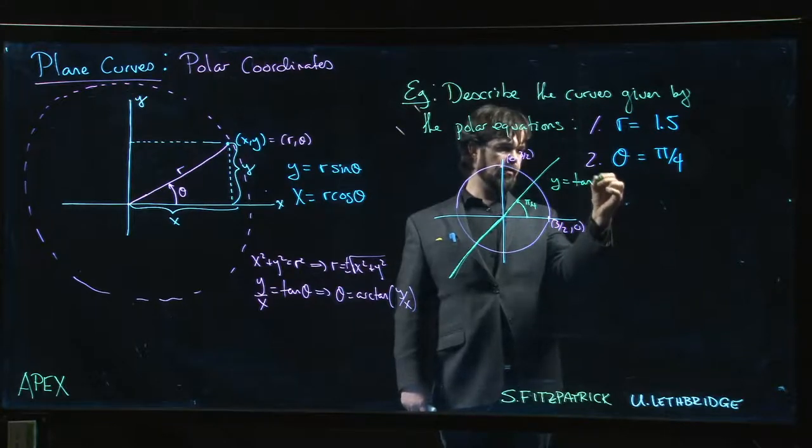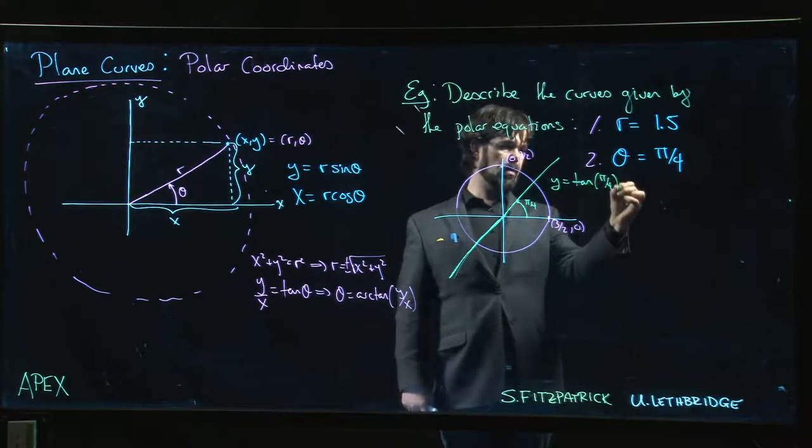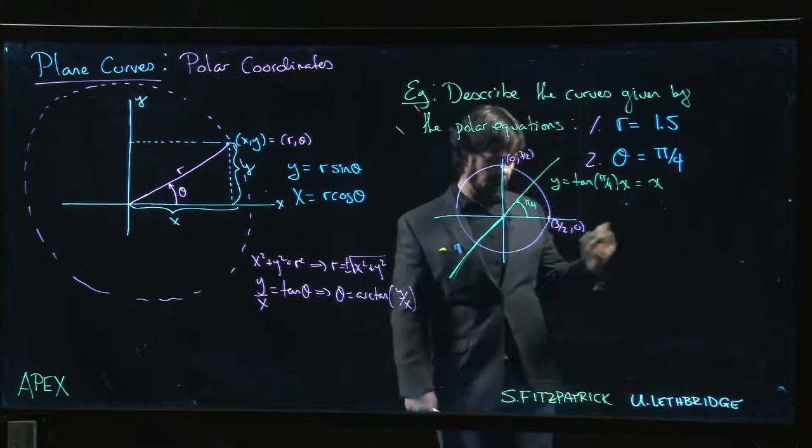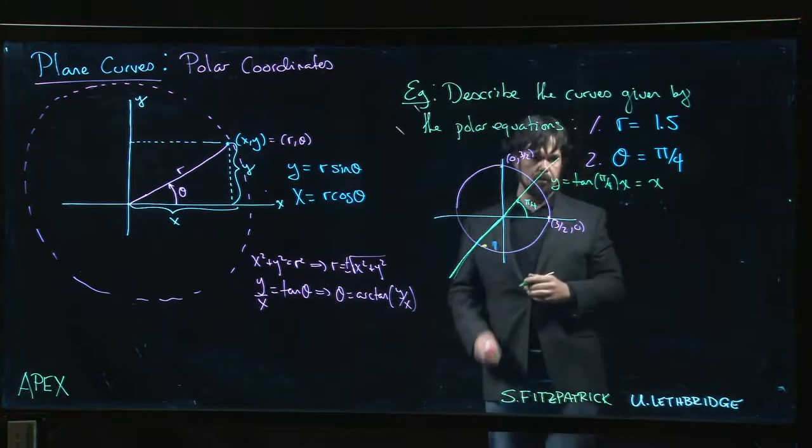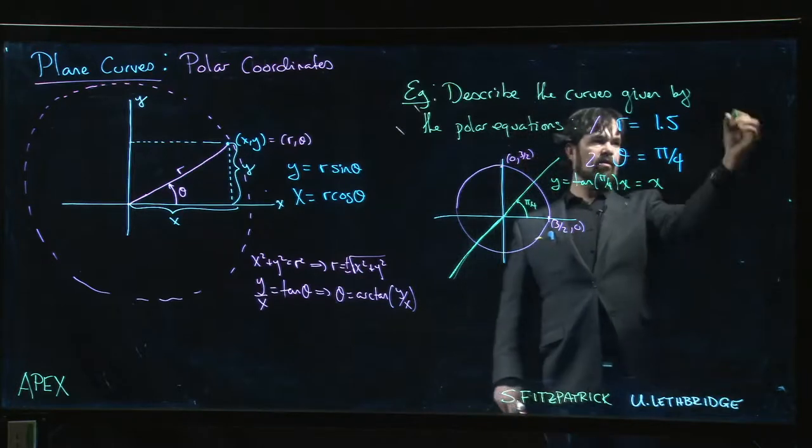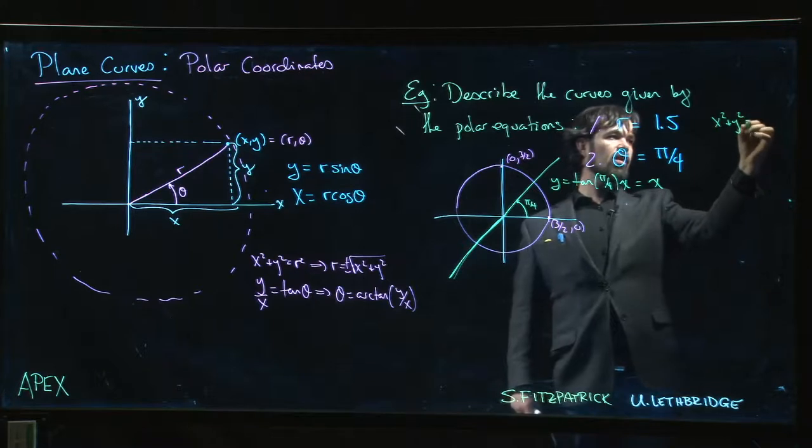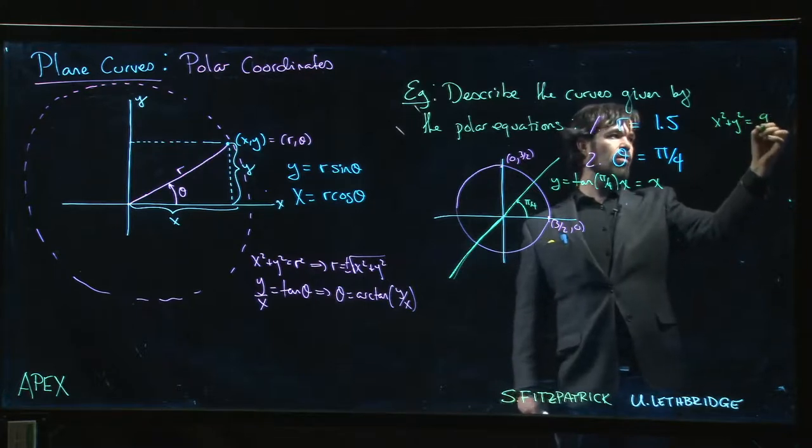So in this case, tan(π/4) times x, or just y = x, because tan(π/4) is 1. So this is just the line y = x. This is of course just the circle x² + y² = 1.5², so 2 and a quarter, or 9/4 if you want to write it like that.